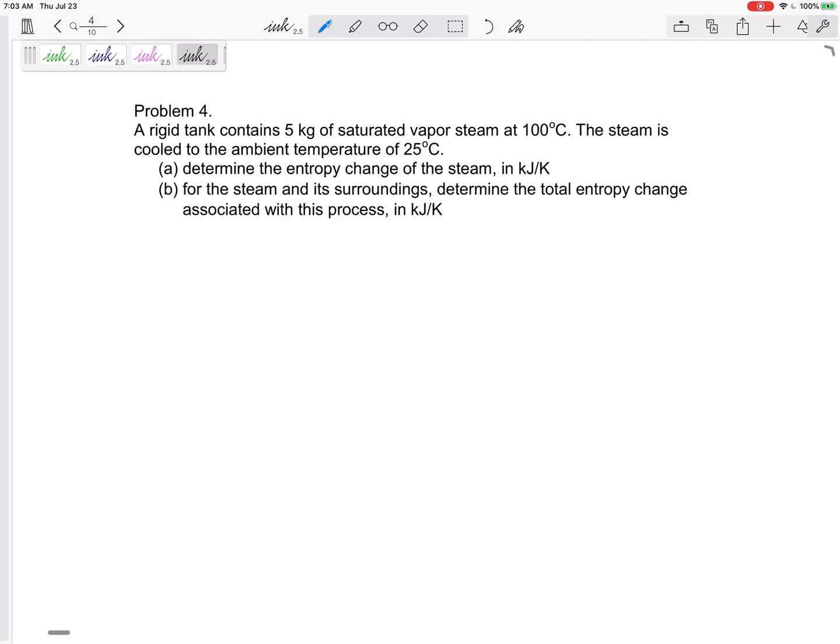This is steam, so I'm going to use the property tables, not going to use any ideal gas equations - not going to use Cp delta T or anything. Use the property tables. Let's look at state one: steam, told me it was saturated vapor, saturated vapor, 100 degrees C.